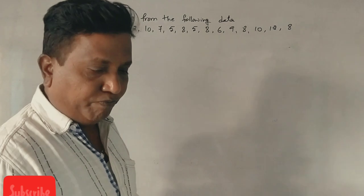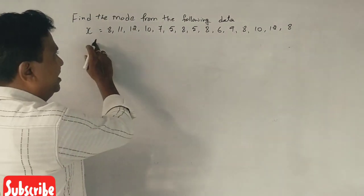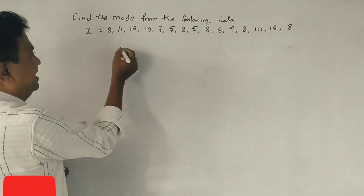In this problem, we can calculate the third number of times. Now, we have to do the list. Who is the least?